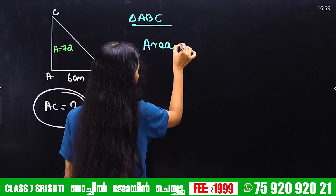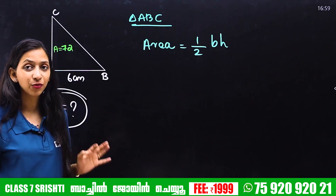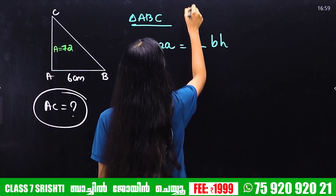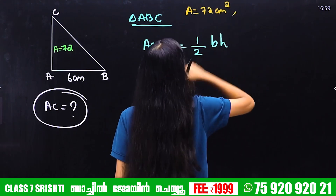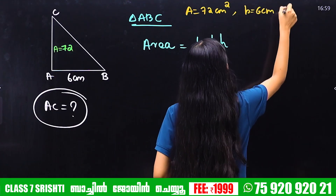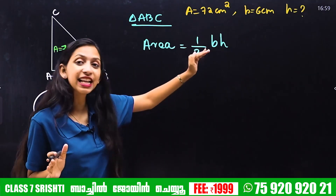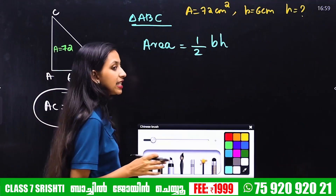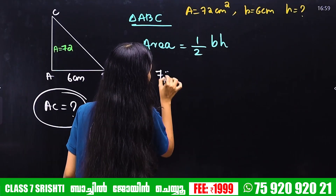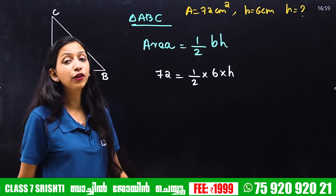Area is equal to half B into H. We have A is equal to half B into H. Let's substitute into the equation. 72 is equal to half into 6 into h. We will simplify: 2 into h.